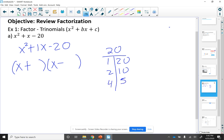Now, since I want the sum or the difference to be 1, I'm going to pick 4 and 5. So 5 is going to be positive and 4 is going to be negative. Positive 5 minus 4 is 1, and positive 5 times negative 4 is negative 20.